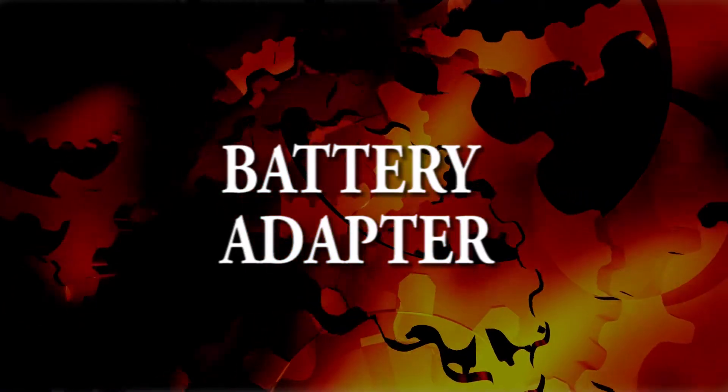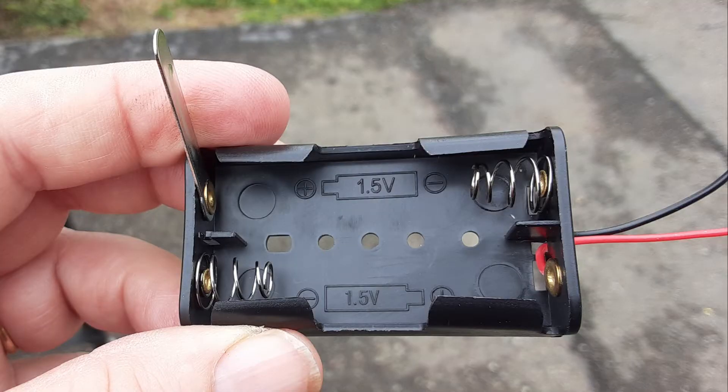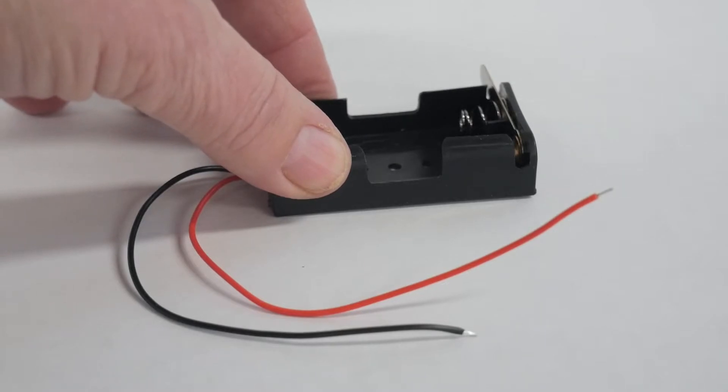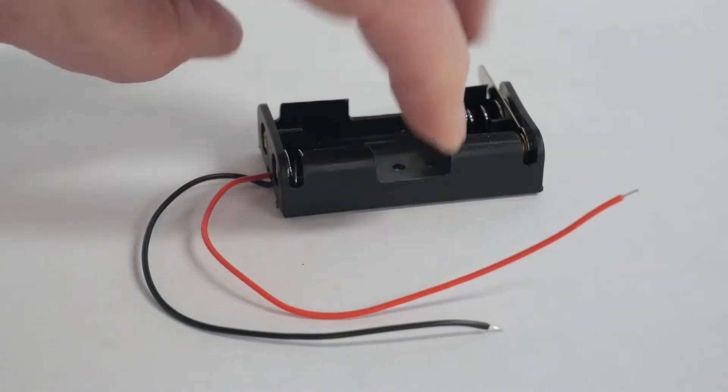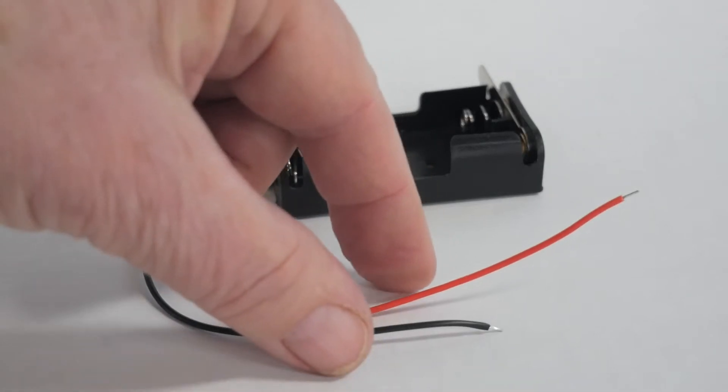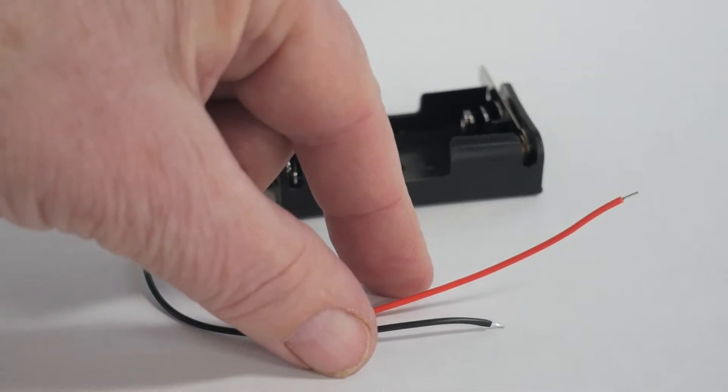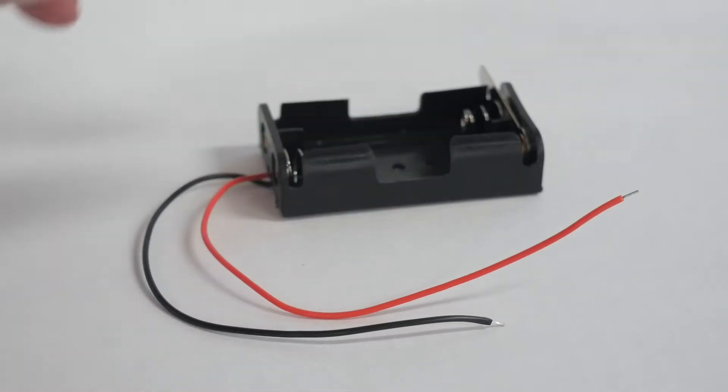Let's begin with the battery adapter. You will have to use this should weather become a factor on your competition day. It is your backup to the solar panel. First look over the adapter and become familiar with the parts. There is the body which holds, depending on what is provided, one or two AA batteries. There are two leads or wires coming out of the adapter. One is red, the other is black.